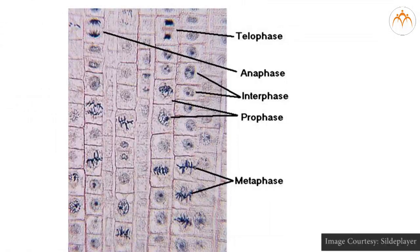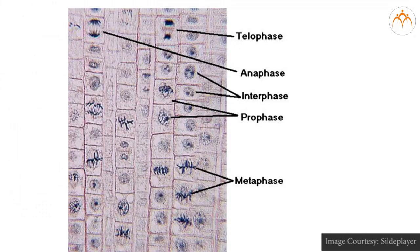Prophase: the nuclear membrane and nucleolus begin to disappear. Thin threads of chromatin start becoming short and thick to form chromosomes along with their sister chromatids. Centrioles divide and migrate to opposite poles of the cell — this happens only in animal cells.